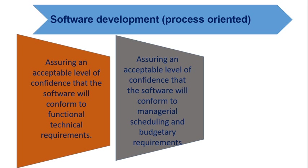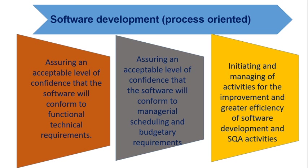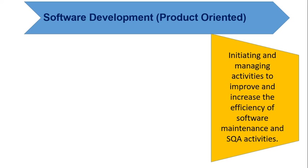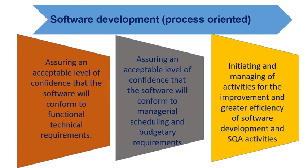Third, initiating and managing activities for the improvement and greater efficiency of software development and SQA activities. For the product-oriented software maintenance objectives: first, initiating and managing activities to improve the efficiency of software maintenance operations and SQA activities. Second, assuring an acceptable level of confidence that the software will conform to managerial scheduling and budgetary requirements. Third, assuring an acceptable level of confidence that the software will conform to functional and technical requirements.